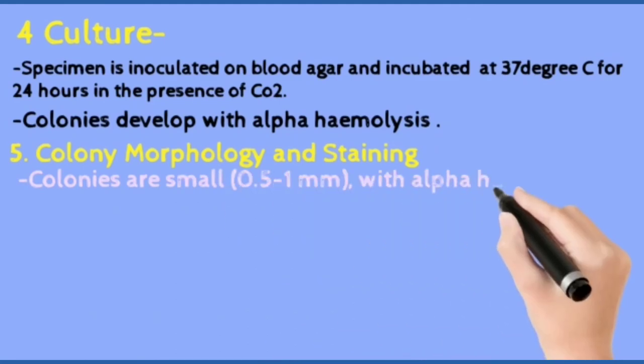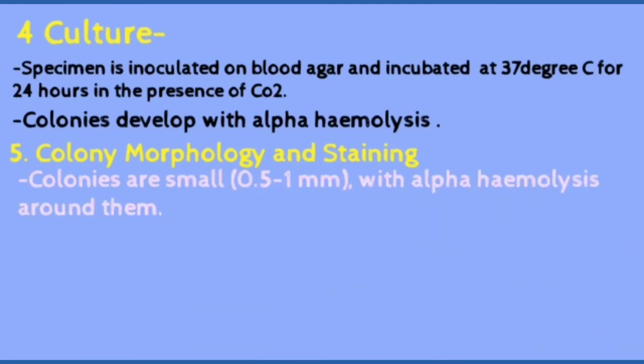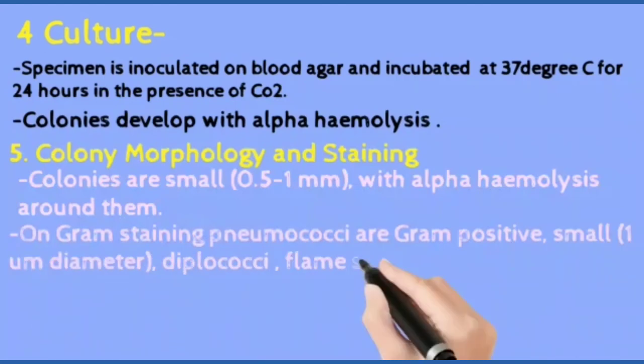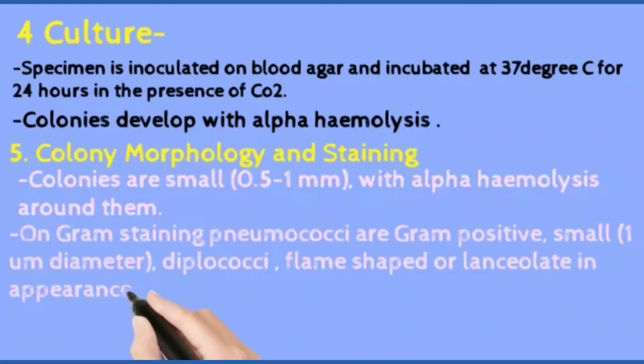Colony morphology and staining: Colonies are small with alpha hemolysis around them. With gram staining, pneumococci are gram-positive, small, paired diplococci that are flame-shaped.